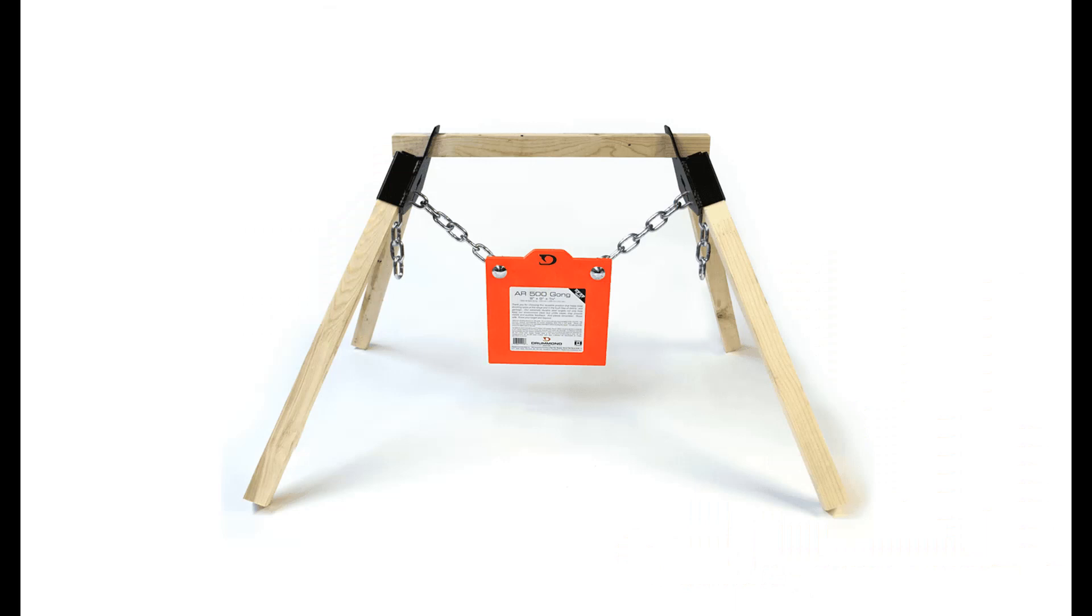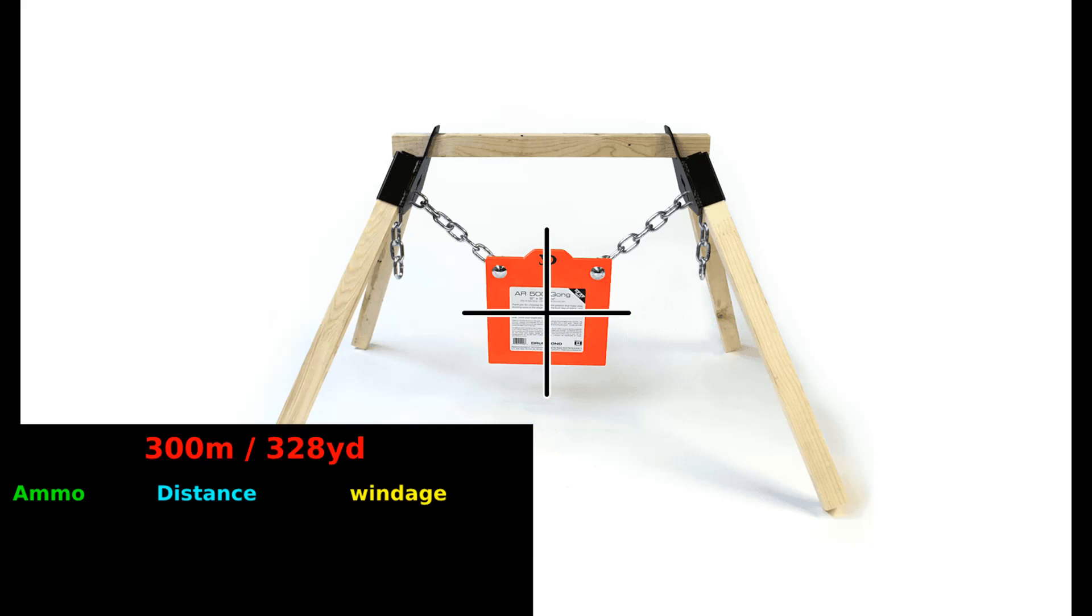If we shoot on a 40 by 40 centimeter target at 300 meters, in the 5.56, a mistake of 40 meters in the distance will shift the point of impact by 20 centimeters, so we will be on the edge of the target. Same will happen with a 10 kilometer per hour mistake in the wind.